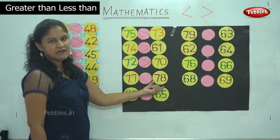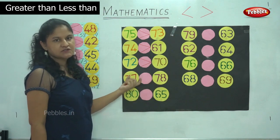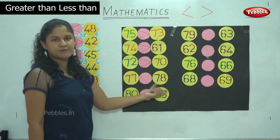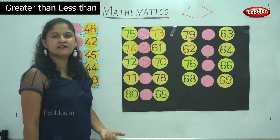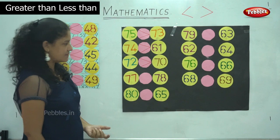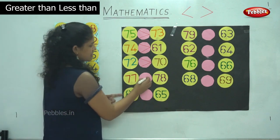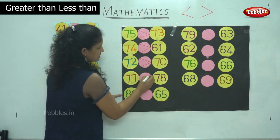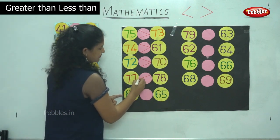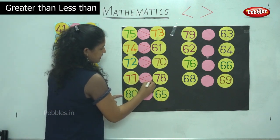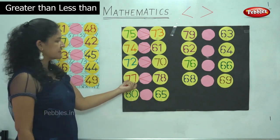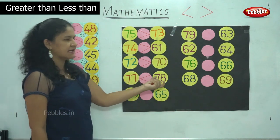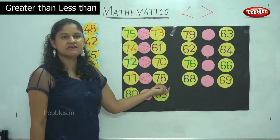Next we have 77 and 78. When you compare both these numbers, 78 is the greater number, so the mouth opens towards the bigger number. We read it as 77 is lesser than 78.